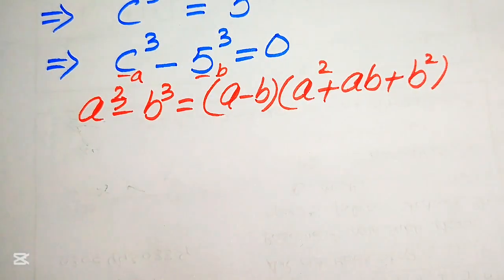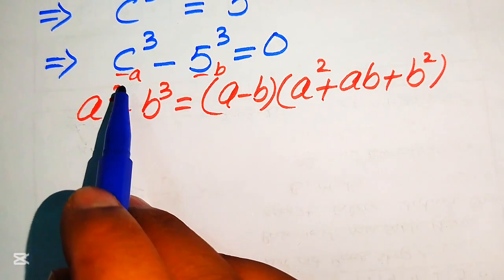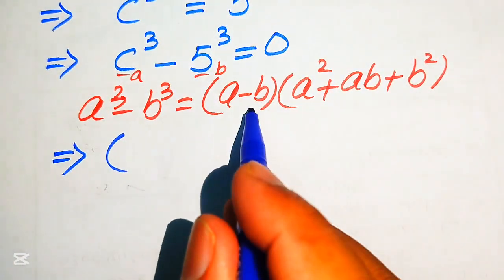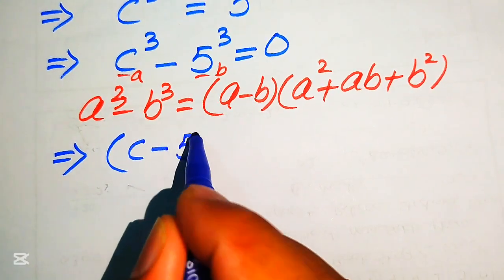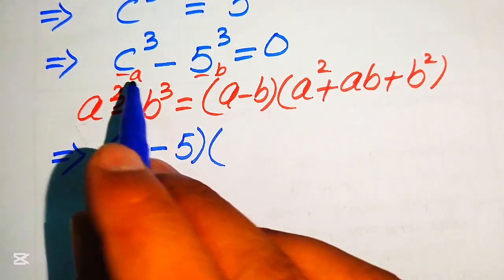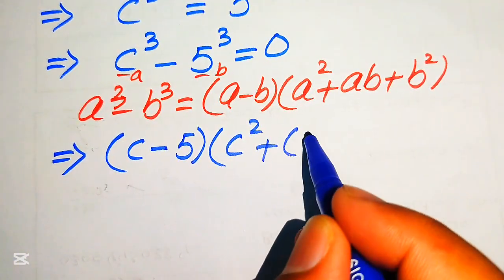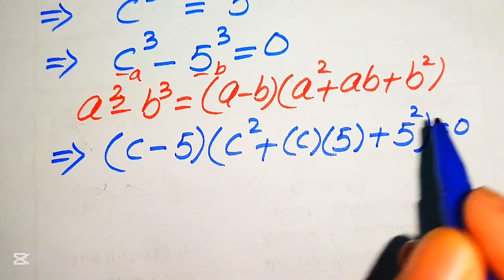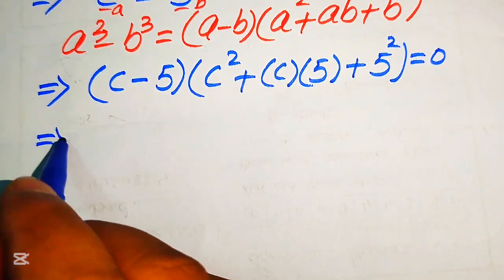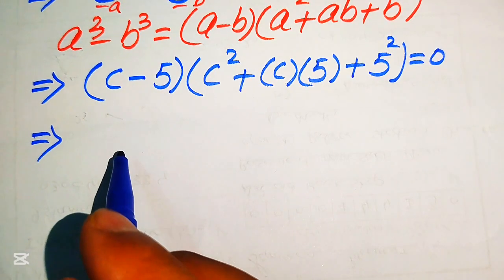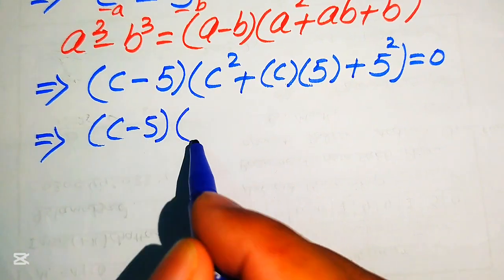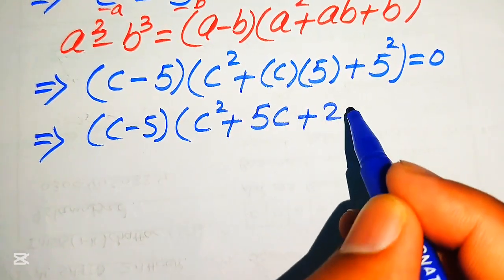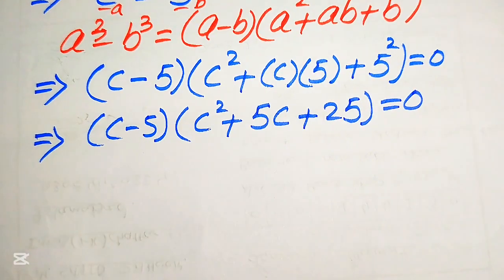According to this formula, our a equals c and our b equals 5. We substitute these values into the right hand side of the formula. We write: c minus 5, times c squared plus c times 5 plus 5 squared, equals 0. After simplification, this becomes c minus 5, times c squared plus 5c plus 25, equals 0.